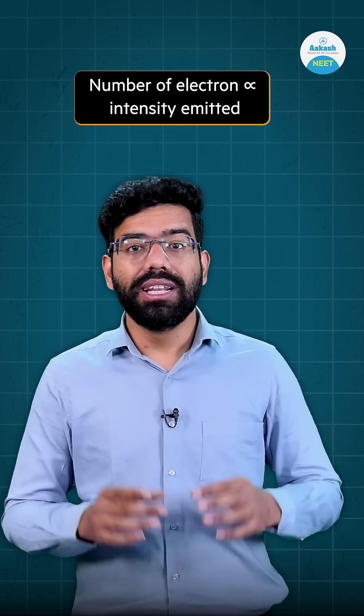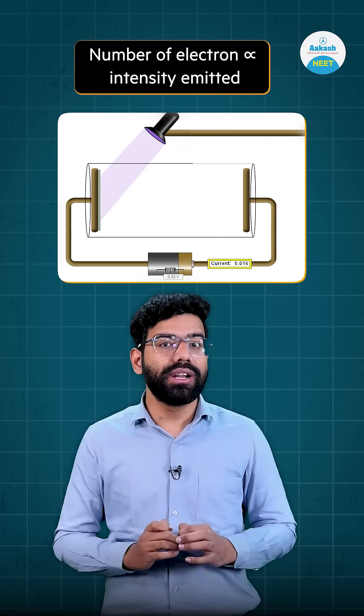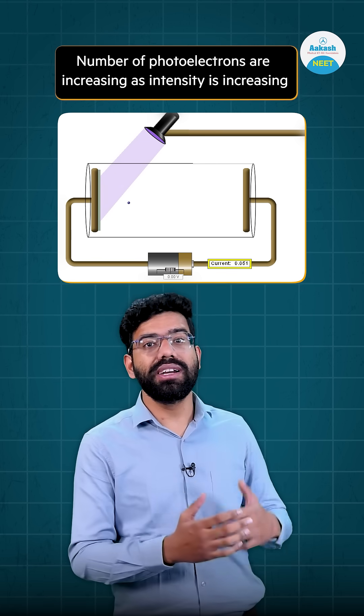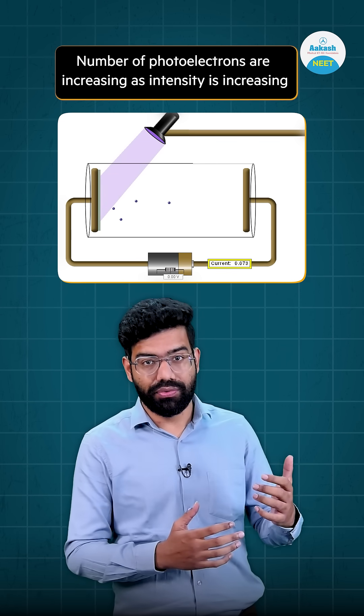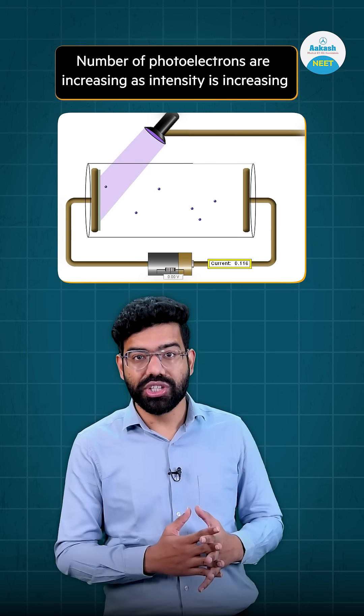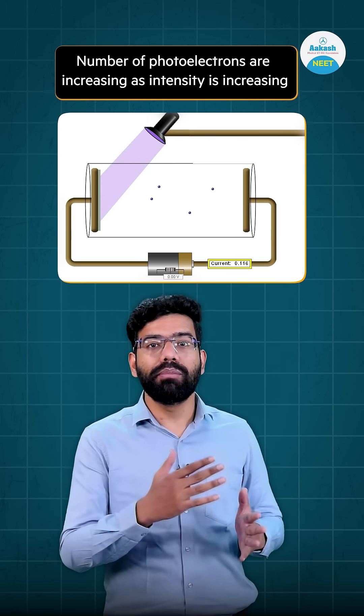If we think about the number of electrons emitted, that depends on intensity. If you increase the intensity of photons with energy higher than the work function, then the number of photoelectrons emitted will increase.